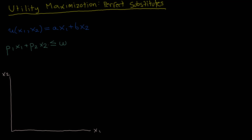One way to simplify this problem is to determine whether or not the consumer will be spending all of their income, and therefore whether the budget constraint holds with equality. This utility function is strictly increasing in both goods. So suppose you didn't spend all of your income — you could take whatever income you didn't spend and spend it on more of good one, more of good two, or both, and your utility would increase. So a solution must be such that a consumer always spends all of their income, and this constraint holds with equality.